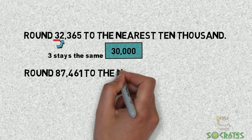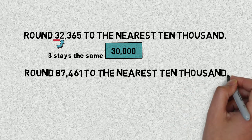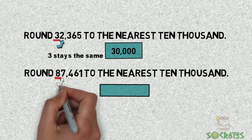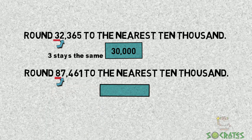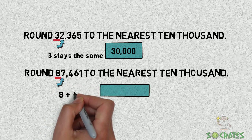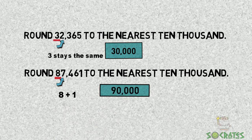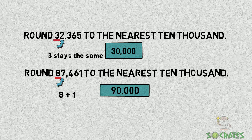Round 87,461 to the nearest 10,000. The 8 is in the 10,000 digit and the 7 is looking next door. It is greater so 8 plus 1 is 9 and the rest are zeros. 90,000 is our answer.